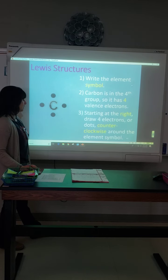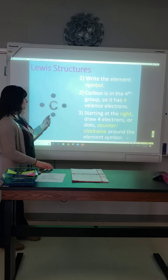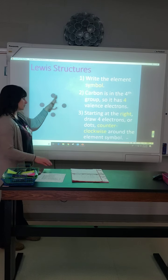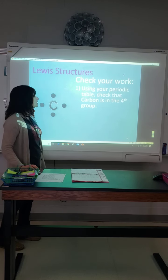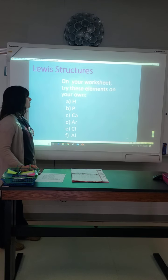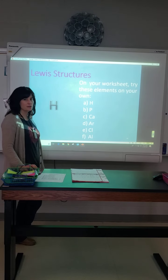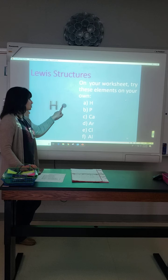Let's look at examples on your worksheet. Hydrogen is in the alkali metal group — valence group 1 — so it should have one dot. Feel free to pause the video at any time if you need a moment to find the element on your table. Phosphorus is a non-metal on the right-hand side of the table, in valence group 5, so you add dots going right, top, left, bottom, then one more to the right — five dots total.